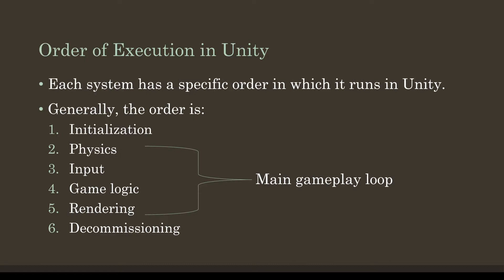This gameplay loop repeats continuously: doing any physics calculations, detecting any input, doing any game logic and handling that input, and then rendering everything before repeating over again. If a game object is removed from a scene or otherwise destroyed, it then enters into its decommissioning order.